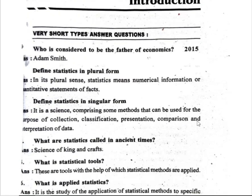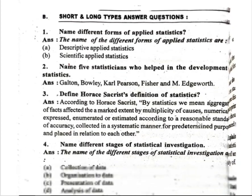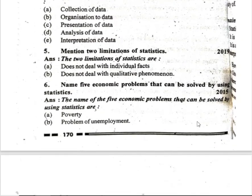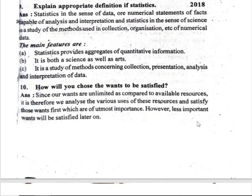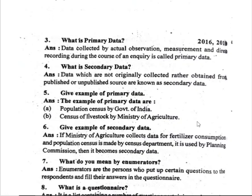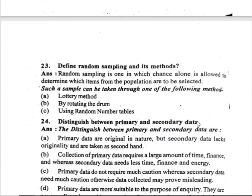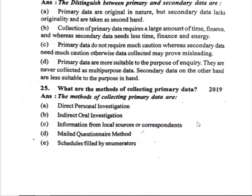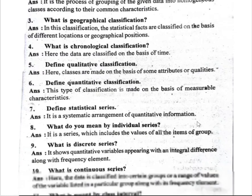Questions 1–7 are important. What is known as the father of statistics? Name the different forms of applied statistics. Write the limitations of statistics. Briefly explain the significance of statistics in economics. What is primary data? What is secondary data? These are very important.